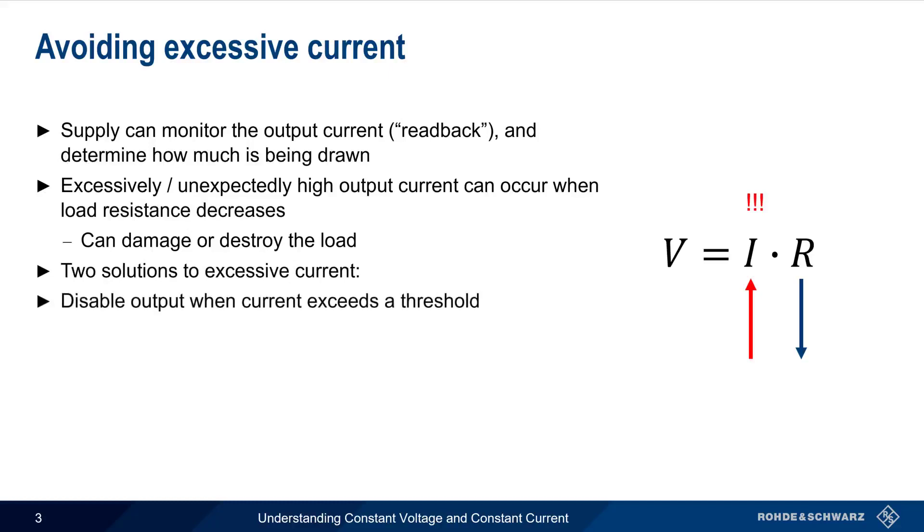The first is to simply disable, or switch off, the output if the supply senses that the current threshold is being exceeded. This is often referred to as over-current protection, or as an electronic fuse.